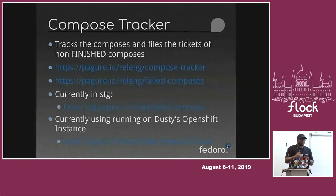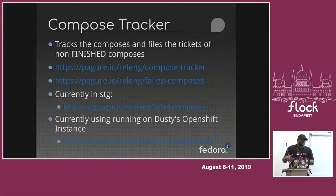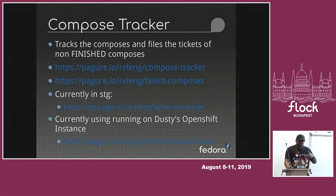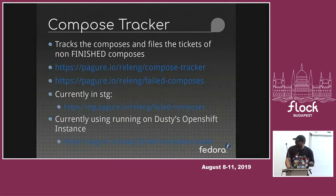People were already using that instance. So we thought we would use that instance that is already running, and when we move to prod, we will use the releng-maintained prod version. Currently, we are tracking all these things over a particular URL — pagure.io/t/failed-composers — that's where we are currently tracking things.